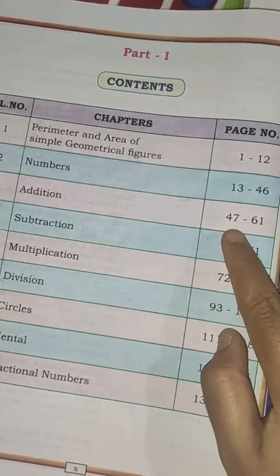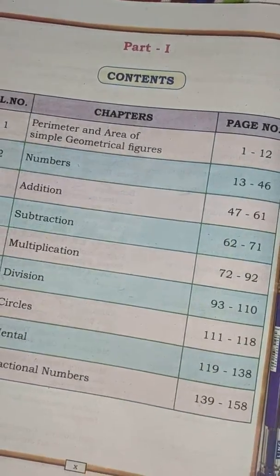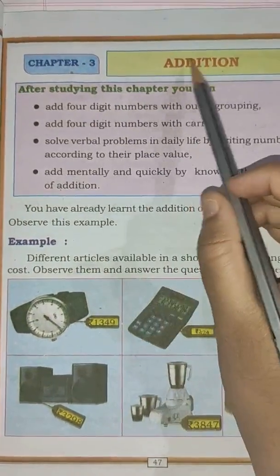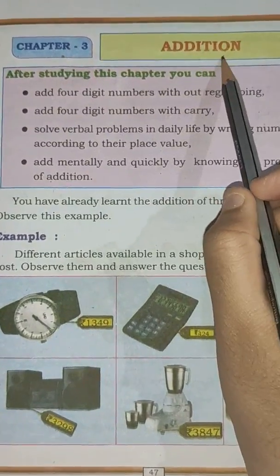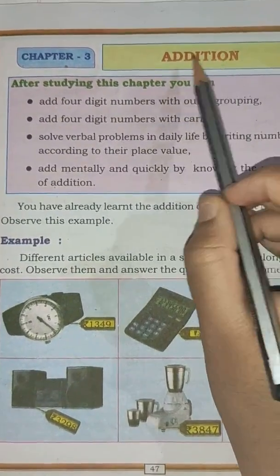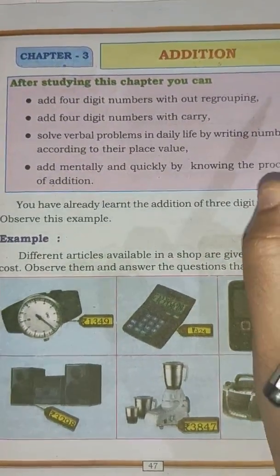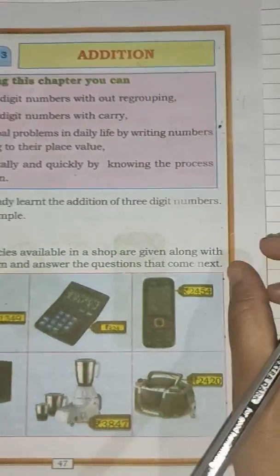Okay, so now open page number 47, Chapter number 3, addition. Now tell me what is the meaning of addition? Addition means the act of adding anything is called addition.